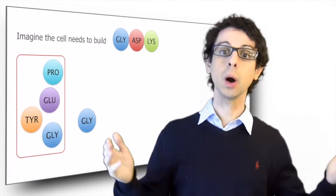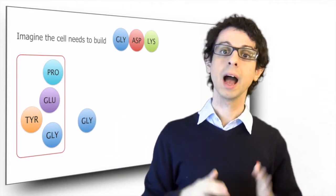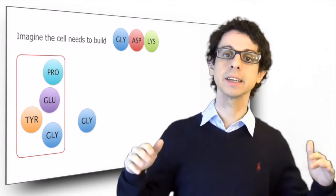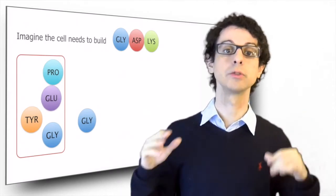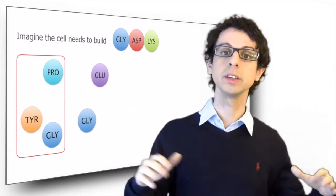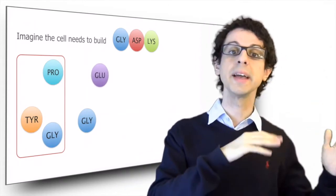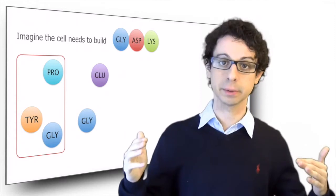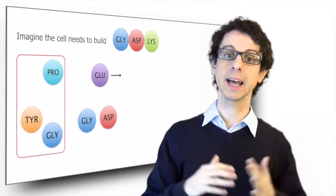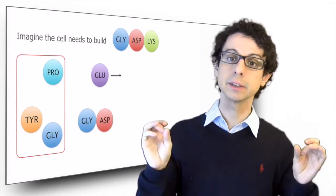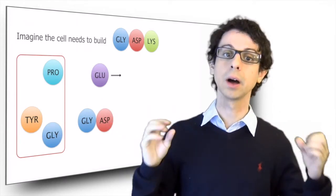Now we need aspartate. But oh oh, there's no aspartate available. However, as it turns out, aspartate is one of the non-essential amino acids, and it can be made from glutamate. So what we can do is we can take glutamate, make a transamination to aspartate, and now we're good to go. We can take aspartate, bring it next to glycine, make a covalent bond, our peptide bond, and on to the next one.